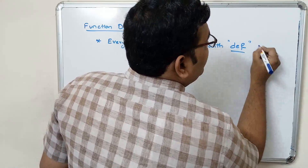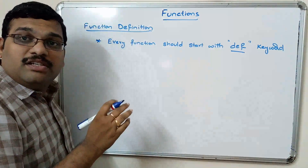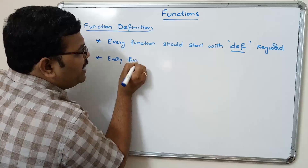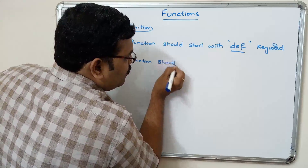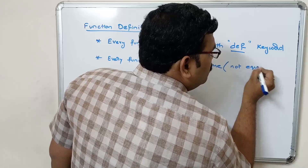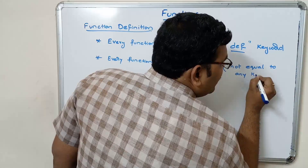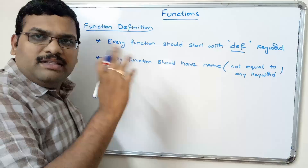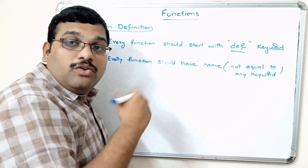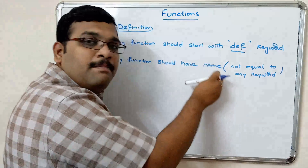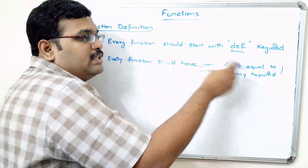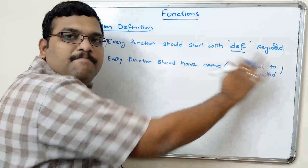All functions should start with the 'def' keyword. Every function should have a name, and that name should not be equal to any keyword. This is the same rule we applied in C language. Since this is a user-defined function, the user must give a specific name that does not match any of the Python keywords covered in the previous session.